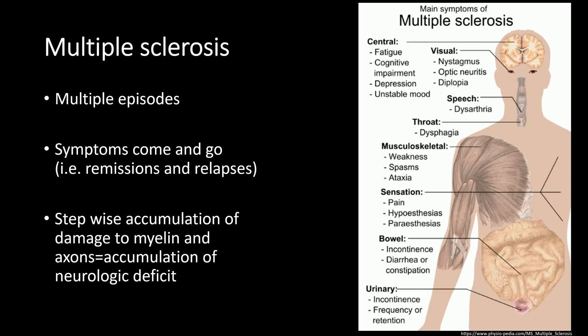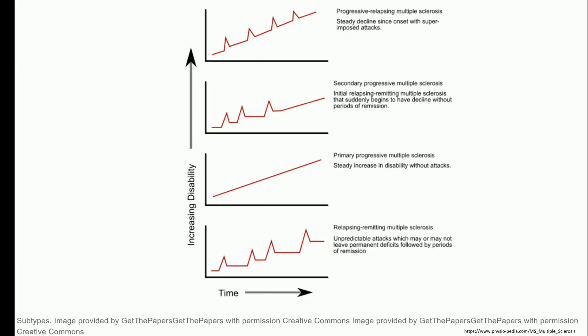The symptoms of multiple sclerosis are very varied depending on where in the central nervous system the demyelination occurs. If it occurs in the spinal cord, you can have symptoms including musculoskeletal issues, altered sensation, and bowel and bladder incontinence. If it occurs in the brain, you can have cognitive issues. If it occurs in the optic tract, there can be visual issues. The symptoms come and go and can be very varied depending on which part of the central nervous system is involved.